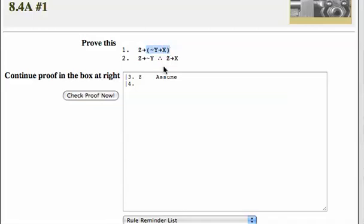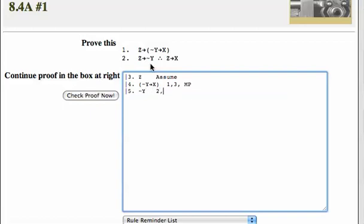I want to see if I can copy and paste them in. So I'm going to say that that follows from lines 1 and 3 by rule of modus ponens. Line 5, I would say not Y. Now by rule, or from lines 2 and 3 modus ponens.